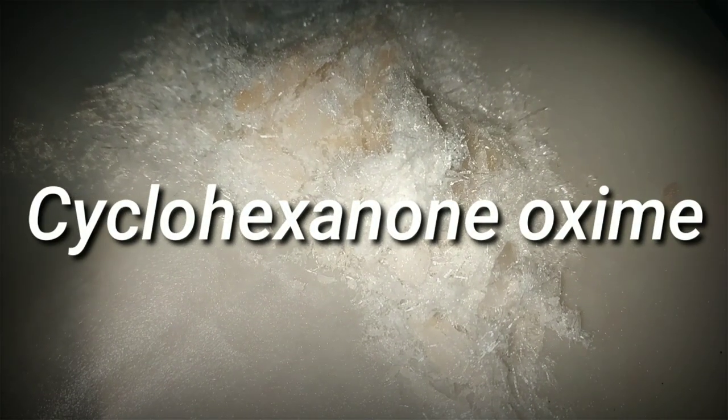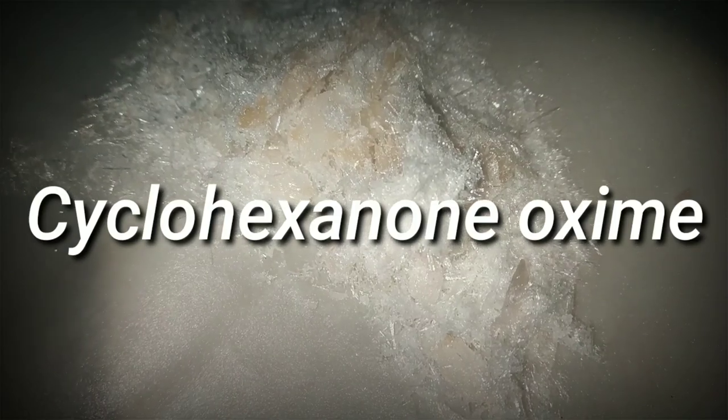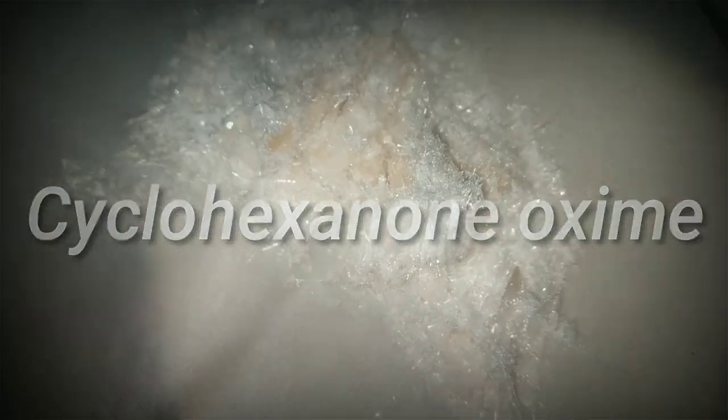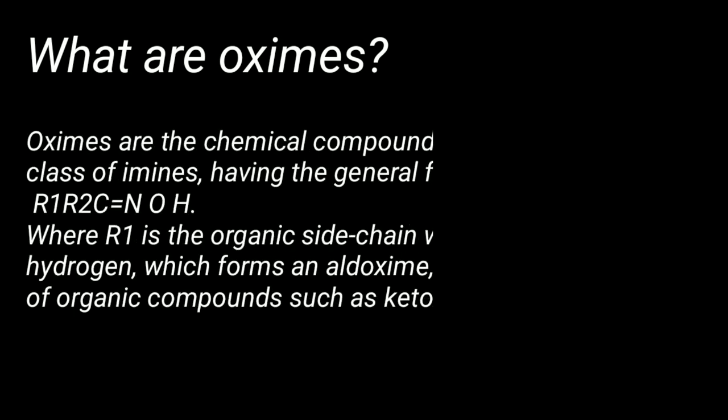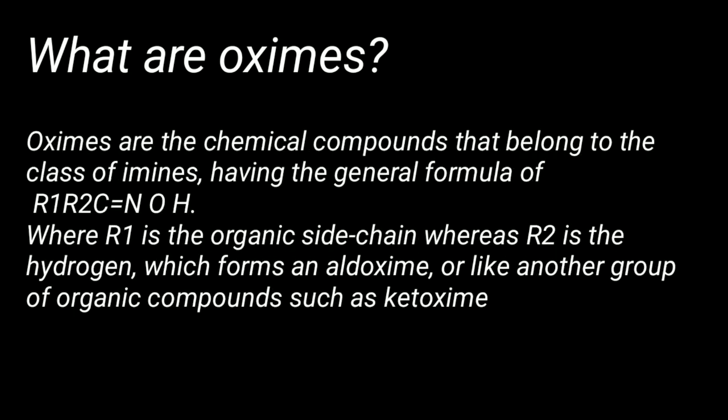In this video we make cyclohexanone oxime. Oximes are chemical compounds that belong to the class of imines, their general formula being R1R2C=NOH, where R1 is the organic side chain and R2 can be a hydrogen — which forms an aldoxime — or another hydrocarbon, which forms a ketoxime.